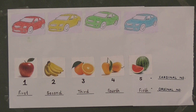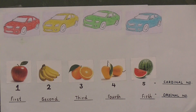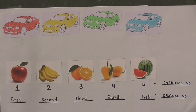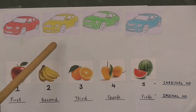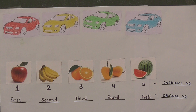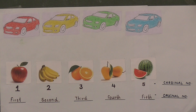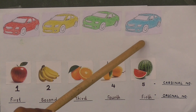Now tell me, which card is at the first position? Red card is at the first position. Red card is at the second position. Red card is at the third position. Which card is at the fourth position? Blue card is at the fourth position.